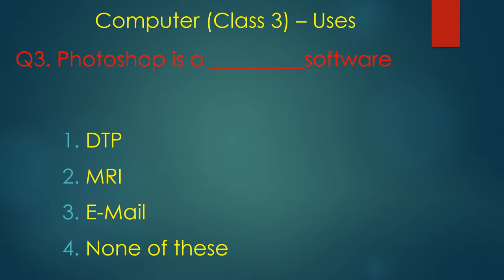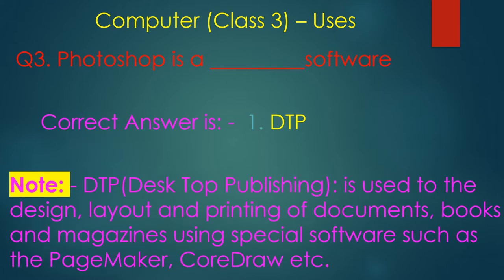Photoshop is a DTP software. The options are DTP, MRI, or none of these. Photoshop is a DTP software, which means desktop publishing.